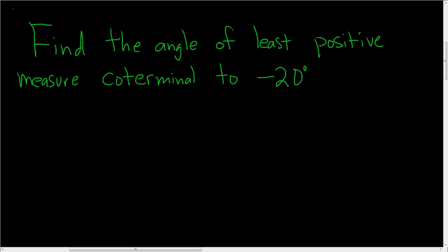Find the angle of least positive measure coterminal to negative 20 degrees. Solution: Coterminal angles are angles whose difference differs by a multiple of 360 degrees. So in order to do this problem,